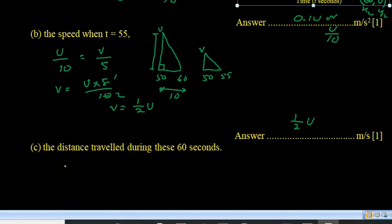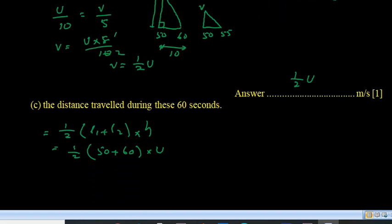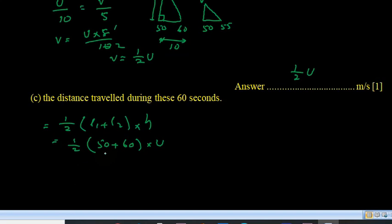So the distance is half l1 plus l2 multiply by height. So it is half, l1 is 50 plus 60, and the height is u. So when we simplify it, it can be written as 110 divided by 2u. And when we simplify it, 55u is the total distance traveled.